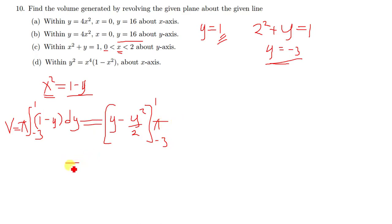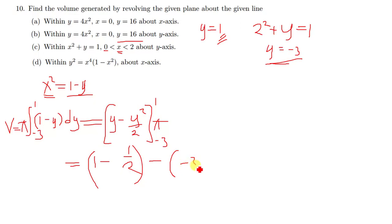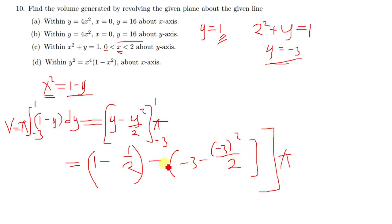Now it's just a matter of plugging in the limits. Volumes generated by revolving objects is just as simple as this: where there's y you put 1, then minus 1 squared over 2; then for the lower limit put negative 3, giving you negative 3 minus (negative 3) squared over 2. Don't forget to multiply everything by pi. This is straightforward to simplify — everyone can do it.